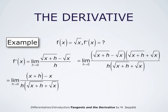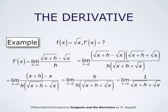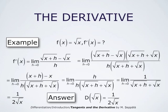The numerator x plus h minus x simplifies and becomes just h. So the task is now to compute the limit as h goes to zero of h divided by h times the expression square root of x plus h plus square root of x. The h cancels out, so this is the limit as h goes to zero of one divided by square root of x plus h plus square root of x. As h goes to zero, this approaches one divided by two times square root of x. So the answer is that the derivative of the function square root of x is one divided by two times square root of x.